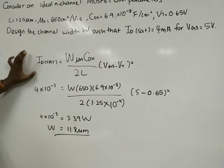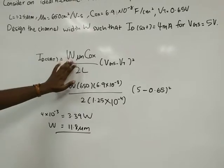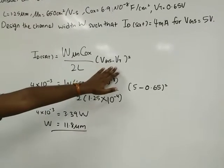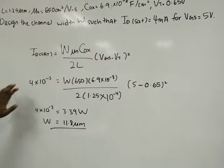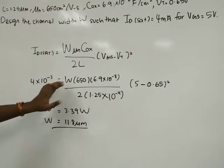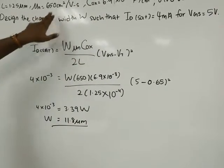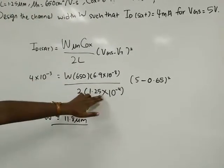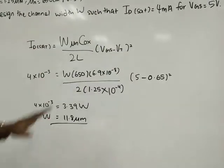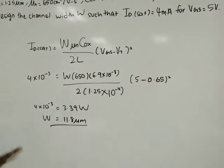The saturation current formula is ID = (W/L) × (μn × COX / 2) × (VG - VT)². We substitute the values: 4 mA equals W × 650 × 6.9×10⁻⁸ / (2 × 1.25 μm) × (5 - 0.65)². Solving for width to get W = 11.8 μm.